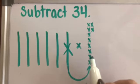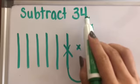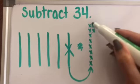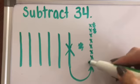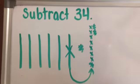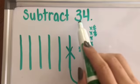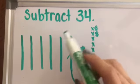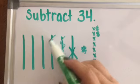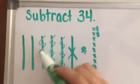Now we have more than enough to take away 4. So I'm going to subtract 4. 1, 2, 3, 4. Okay. And I also need to subtract 30. 10, 20, 30.